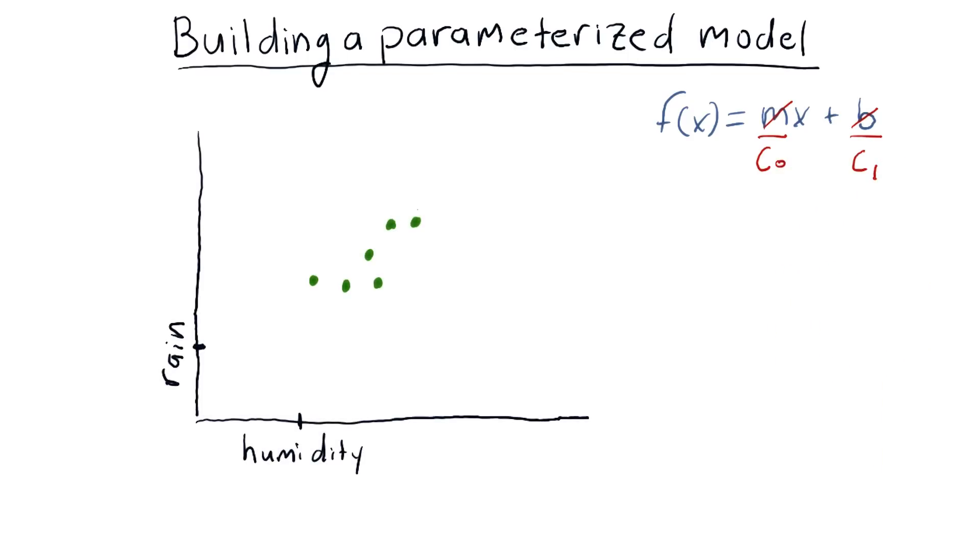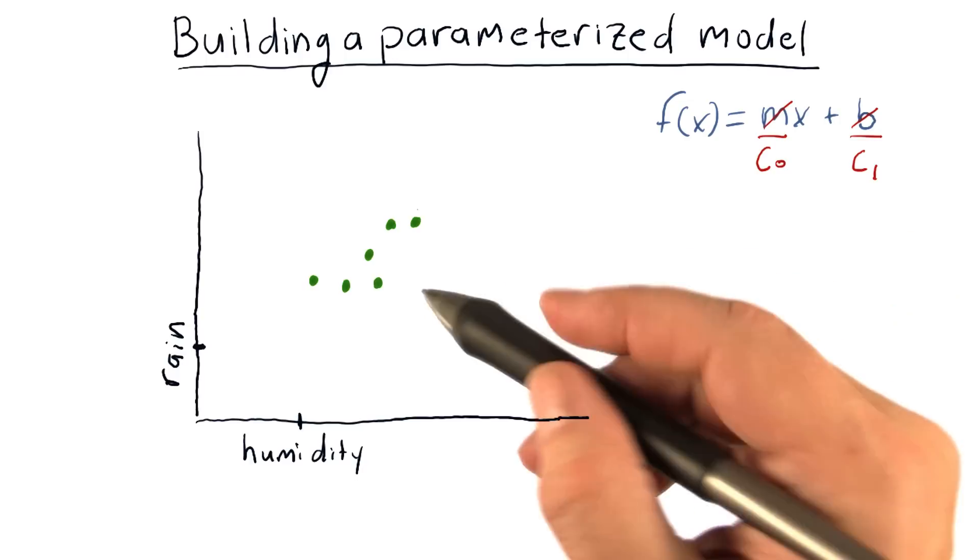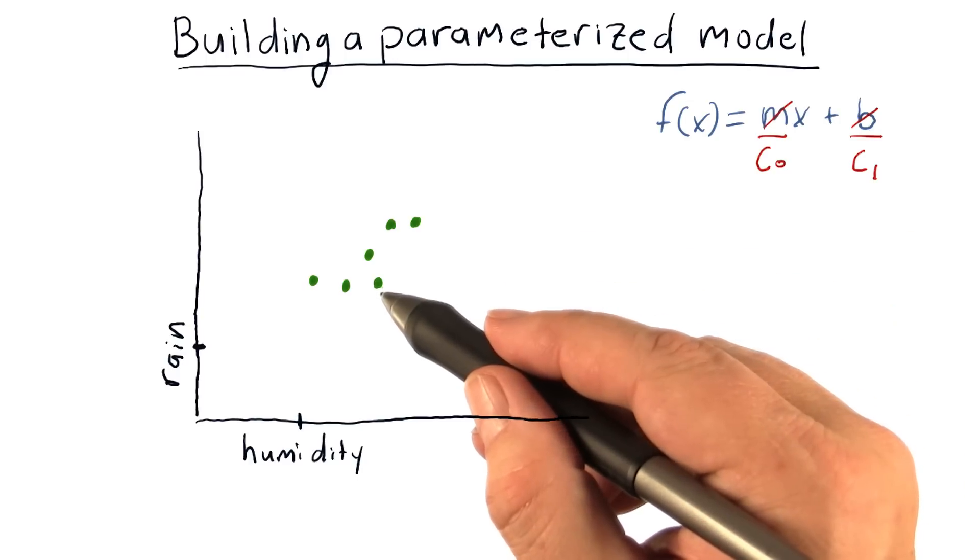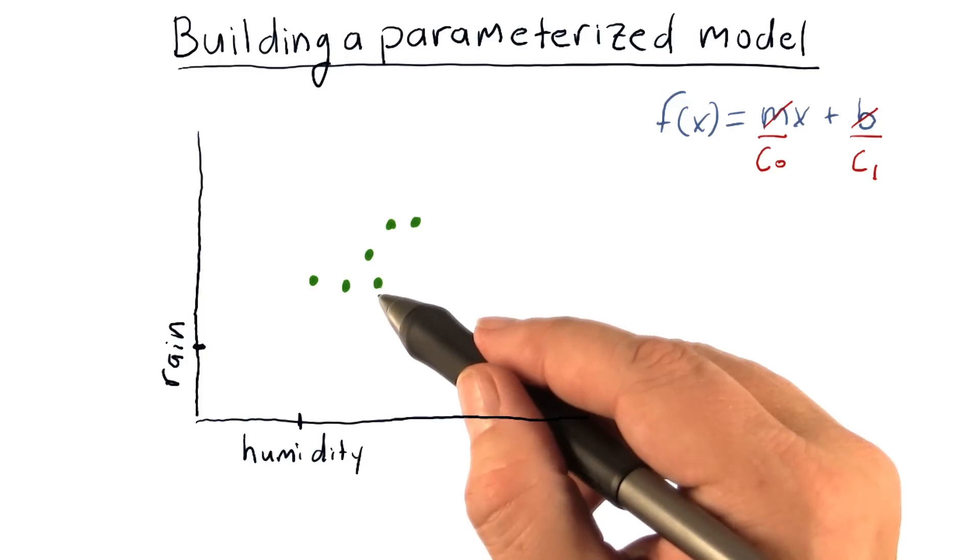Let me motivate this with an example. Let's suppose we have some data from an experiment. Now this can work for many sorts of experiments, but for now, let's assume we've taken some measurements of humidity, and we've observed on those particular days we measure the humidity, how much it rains.